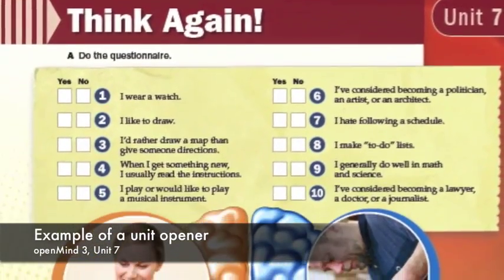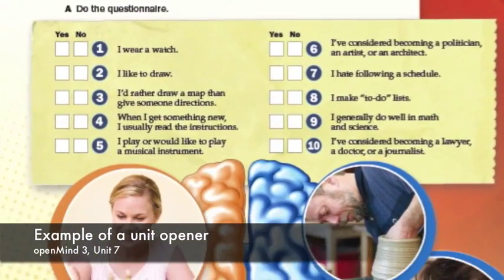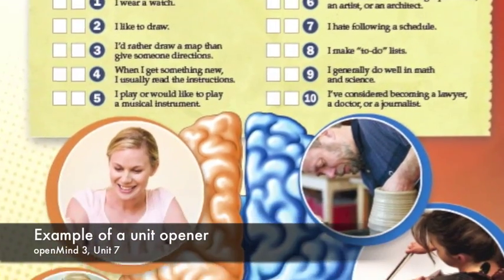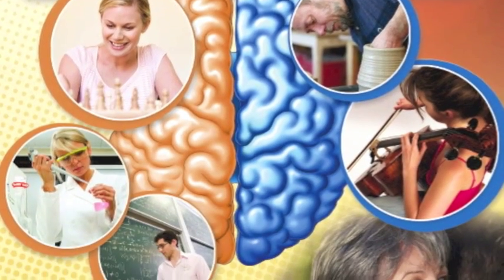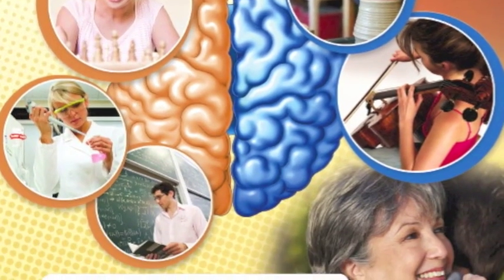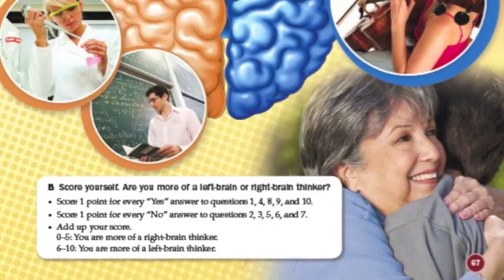Students do a little questionnaire and then have the opportunity to check their score and talk about it. It's kind of fun because you can see how many people in the class are left brain people and how many are right brain people.